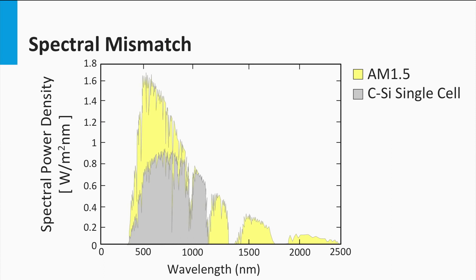Here we see the spectral power density function again. Let's consider the typical optical loss mechanism for a semiconductor with a band gap E-gap. We take crystalline silicon as an example, and we assume an EQE of 100% above the band gap for the solar cell.